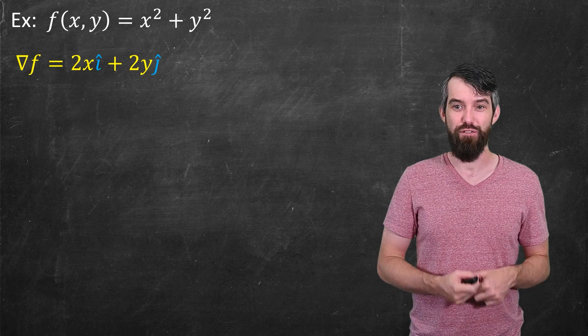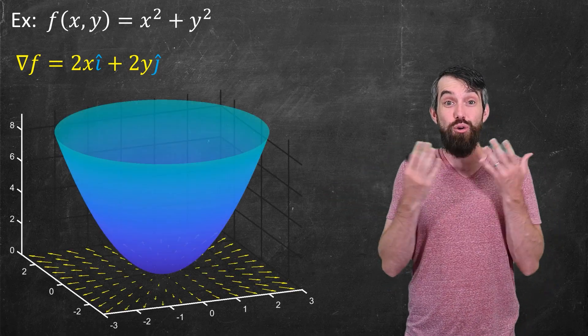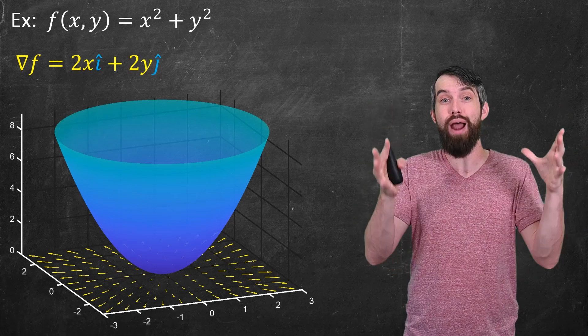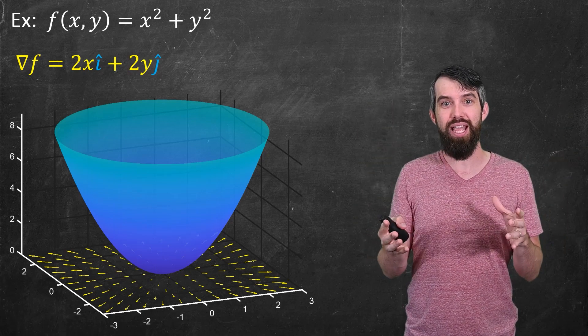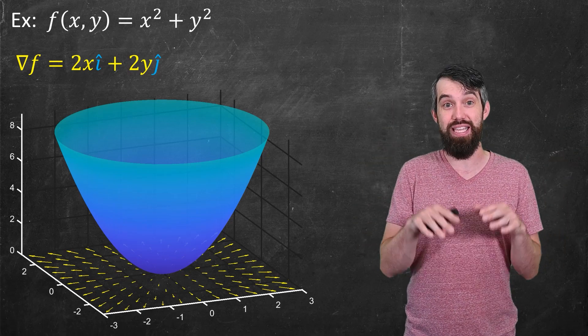So, this is my picture for this function. What we see is the graph of the function. That's this blue paraboloid. And then, in the domain, the domain is the x, y plane,